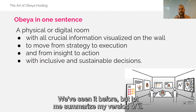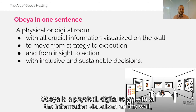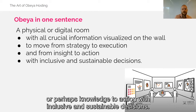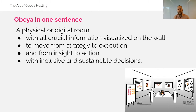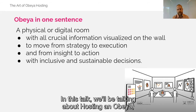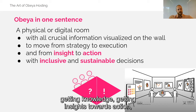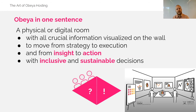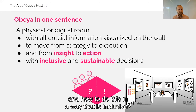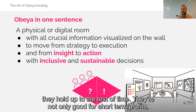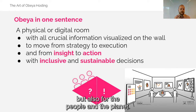Let me summarize my version of it. The Obeya is a physical or digital room with all the information visualized on the wall, which allows us to go from the big strategy to execution — from insight or perhaps knowledge to action with inclusive and sustainable decisions. In this talk, we'll be talking about hosting an Obeya, which focuses on how we can move people from getting shared understanding and insights towards action, in a way that is inclusive and sustainable — meaning decisions that hold up to the test of time, not only for short-term profits, but also for the people and the planet.